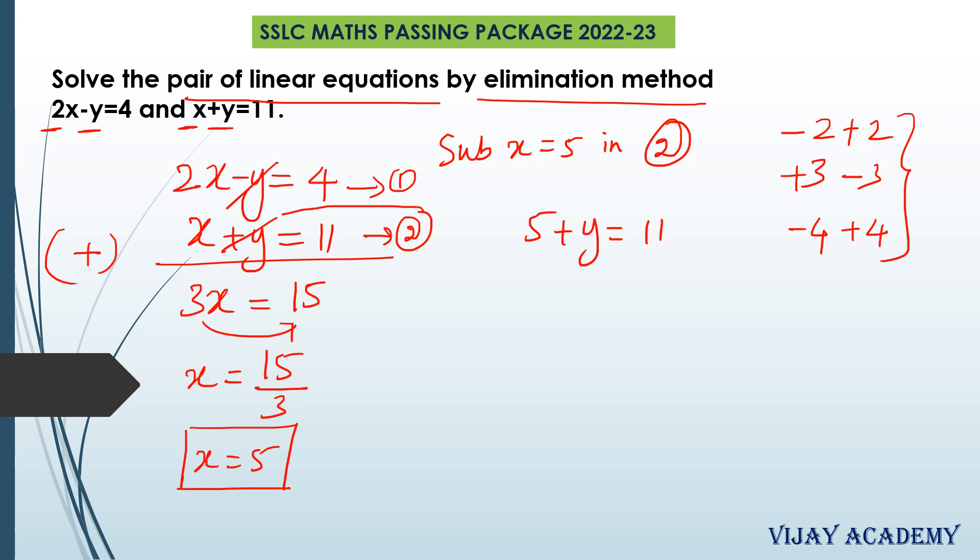So we get 5 plus y equals to 11. The second equation is x plus y equals to 11. So replace x by 5 and transpose 5 to RHS, we get y equals to 11 minus 5. So y equals to 6.